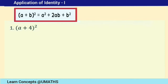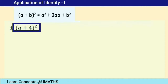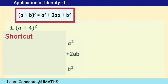Let us solve the square of the binomial a plus 4, whole square, using this identity. Observe this binomial — it is in the format of a plus b whole square. Now let us understand how to remember this formula as a shortcut.